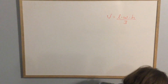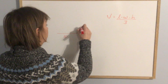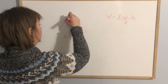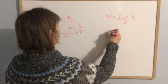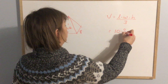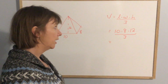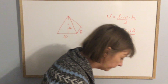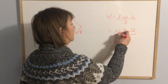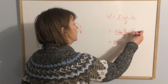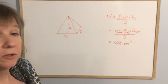In example two, the base was 10 by 8 and the height was 12. So it would be 10 times 8 times 12, divided by three. That gives 320 cubic centimeters.